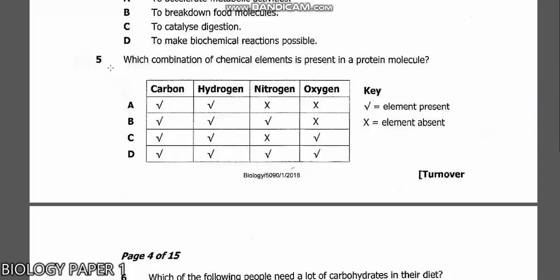Question 5: Which combination of chemical elements is present in a protein molecule? In a protein molecule, you have carbon, you have hydrogen, you have nitrogen, and oxygen. So the answer is D.